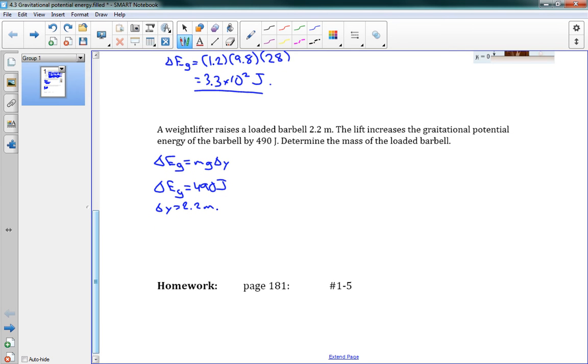So we're going to need to rearrange our equation. We get M is equal to delta EG over G delta Y. And we can plug our numbers in here. 490 over 9.8 times 2.2. And we get a mass of 23 kilograms.